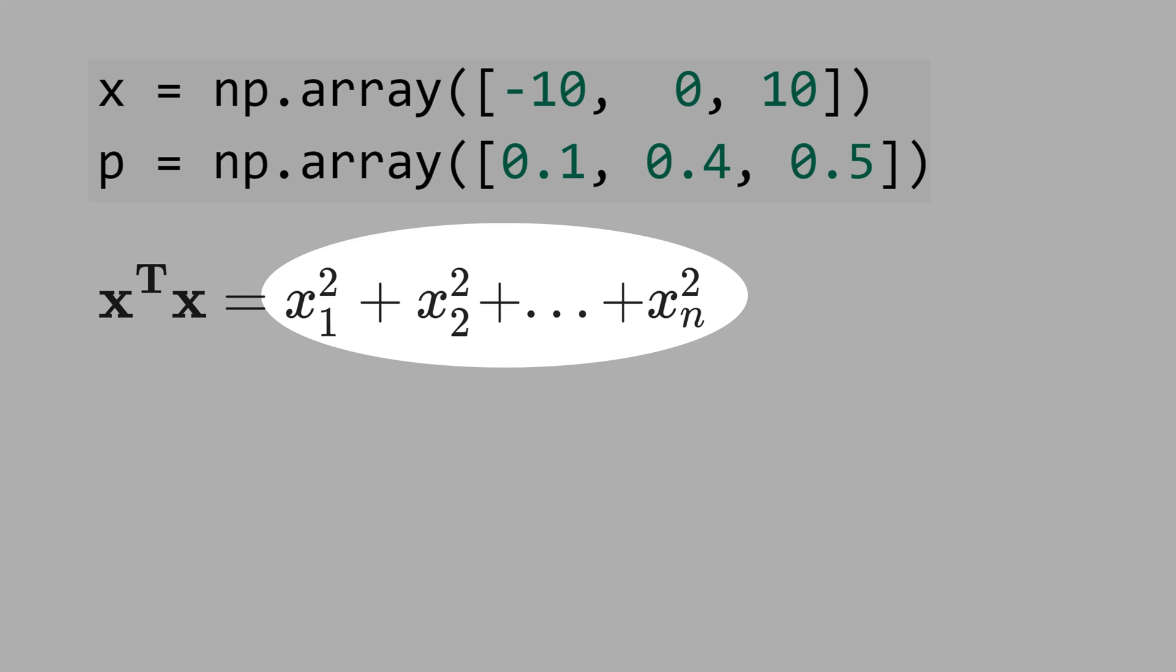Now, let's define the sum of the squares using vector notation, that is, x transpose times x. And let's calculate this. This is 200,